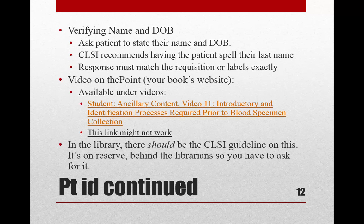Proper patient identification is done by verifying the name and date of birth by having the patient state their name and date of birth out loud. It's recommended to have them spell their last name. For example: 'Hi Mrs. Smith, can you please tell me your first and last name and spell your last name for me?' Then ask for their birthday. While they're telling you, verify that what they say matches your requisition, any labels, and all other paperwork — everything must have exactly the same name spelled the same way with the same date of birth. If they go by a nickname like Jim but their paperwork says James, verify that their legal name is actually James.